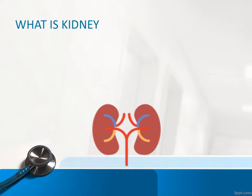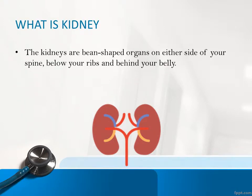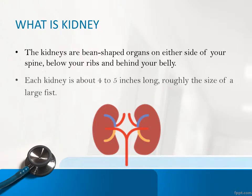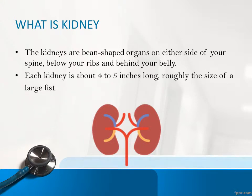What is a Kidney? The kidneys are bean-shaped organs on either side of your spine, below your ribs and behind your belly. Each kidney is about 4 to 5 inches long, roughly the size of a large fist.